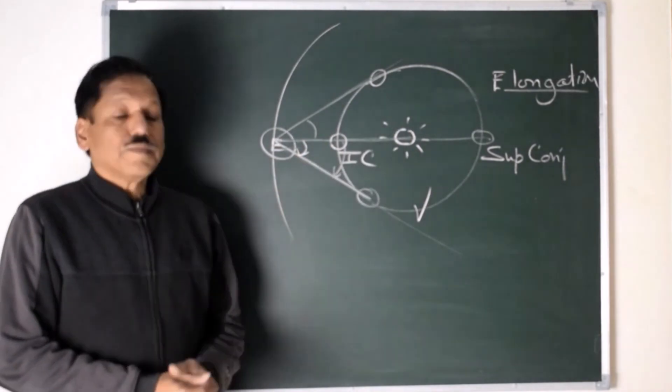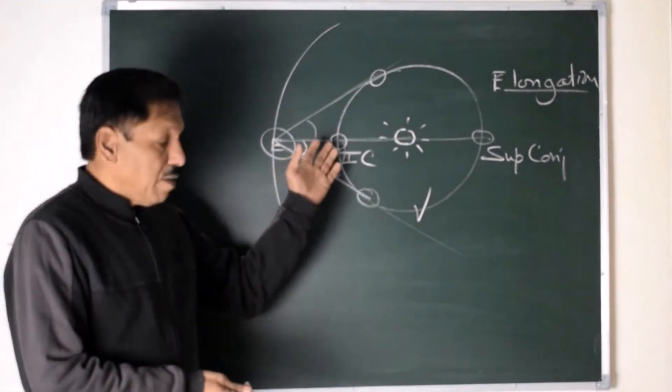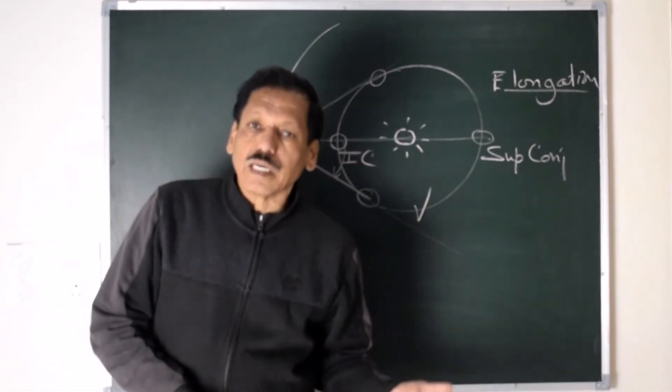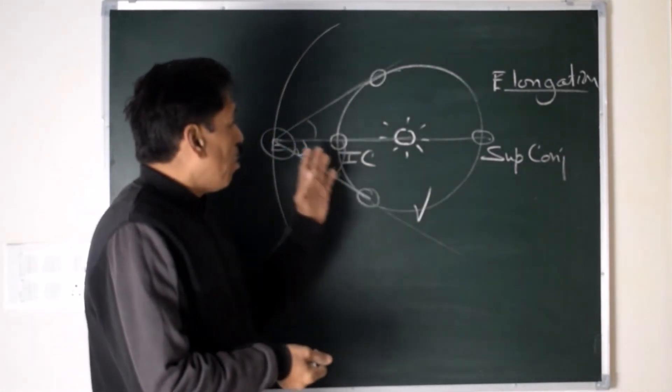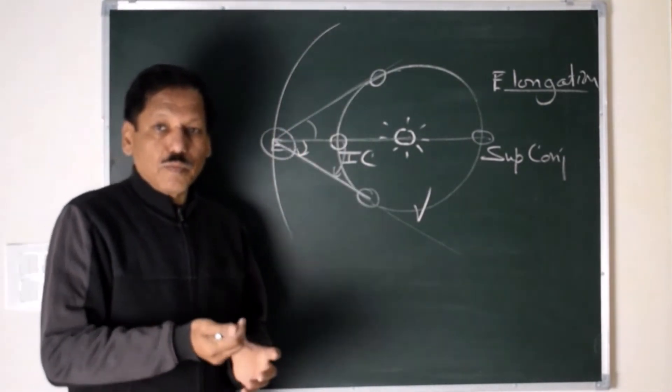Venus can be in conjunction, Venus can be on inferior conjunction and superior conjunction, but they cannot be in opposition like the moon, like superior planets.